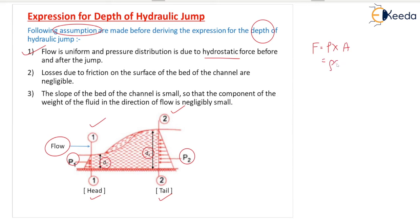Hydrostatic force means force equals pressure times area, and pressure is ρgh. So depending on the depth of water you can calculate the hydrostatic force. Second assumption: losses due to friction on the bed surface of the channel are negligible because they are very small. Third assumption: the slope of the bed of the channel is small, so the component of the weight of the fluid in the direction of flow is negligibly small.